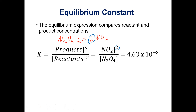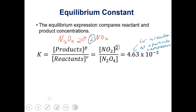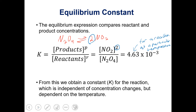For this reaction, the equilibrium constant comes out to 4.63 × 10⁻³. K is always going to be the same for a particular reaction at a particular temperature. If we change the temperature, the value of the equilibrium constant would change. So K is independent of concentration changes for a particular reaction — different concentrations will still yield the same K value — but it is dependent on temperature.